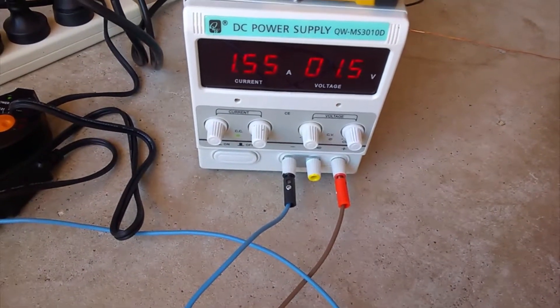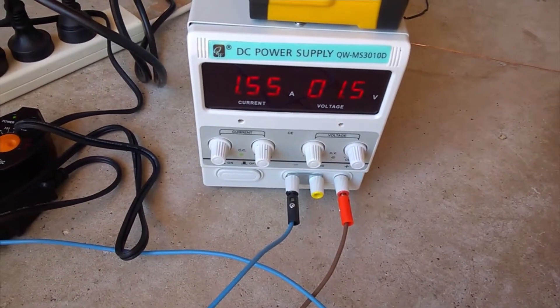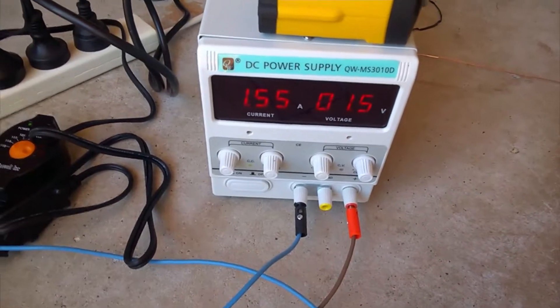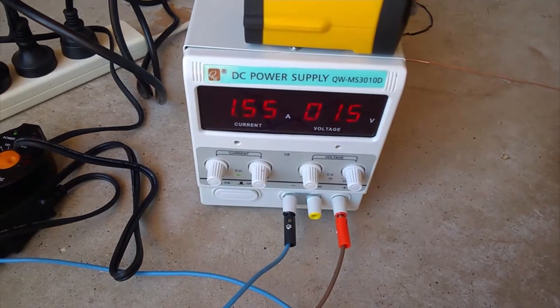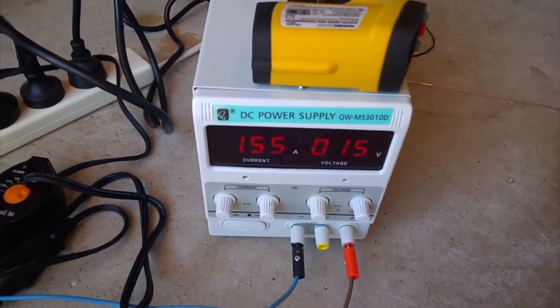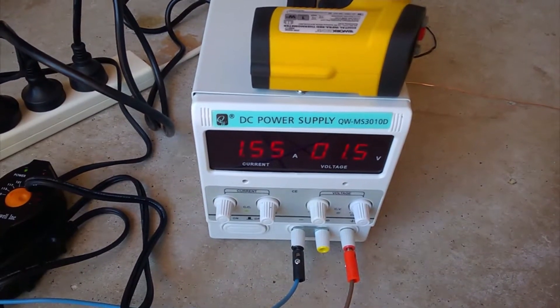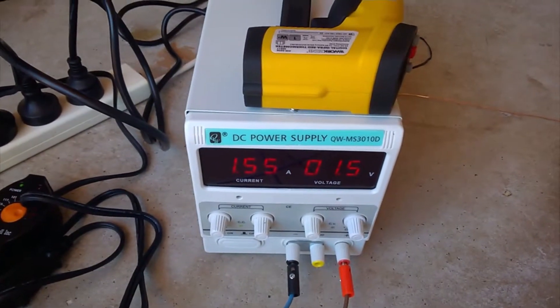So 1.5 volts basically. If you wanted to do a small job, you could use an AA battery to do a job like this. A small AA battery would be enough to produce plating for smaller components like these.